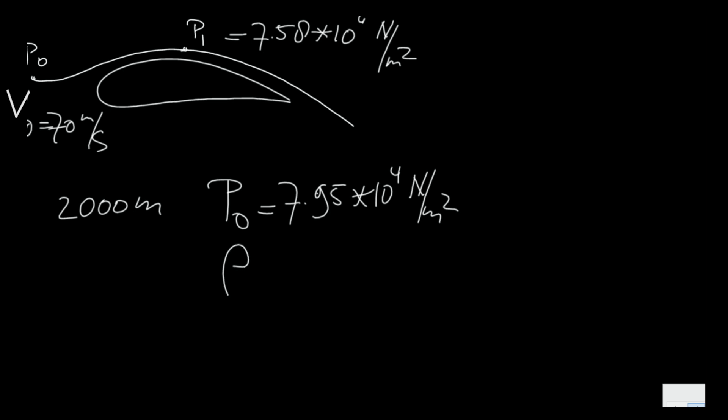Here is a streamline, we have p0 here, p1 here. I assume that it's at the suction side of the airfoil. The example doesn't give it, but let's assume it's there. V0 is 70 meters per second. And p1 is 7.58 times 10 to the power 4 N per square meter. So at 2000 meters standard altitude you find p0 is 7.95 times 10 to the power 4 N per square meter. And we find rho0 is 1.0066 kg per cubic meter.